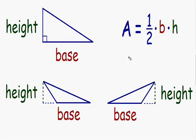In this video we are going to find the area of a triangle. The formula we use is A equals one half times the base times the height. The A stands for the area, the B stands for the base, and the H stands for the height.